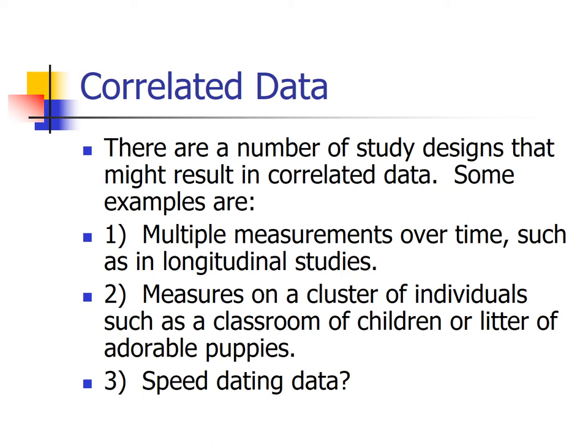What are some situations where you might use this, particularly focusing on correlated data? One possibility is multiple measurements over time, often referred to as longitudinal studies. Maybe you take a sample of 100 patients and measure their blood levels every month for a year. That's 100 patients with 12 measurements each — 1,200 observations — but groups of 12 are all potentially dependent, because your blood level today probably depends on what it was last month.